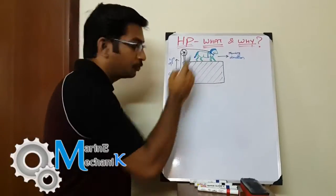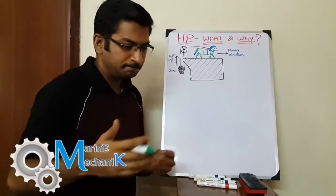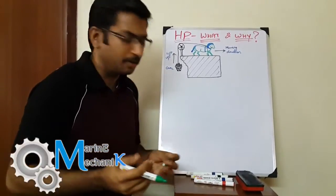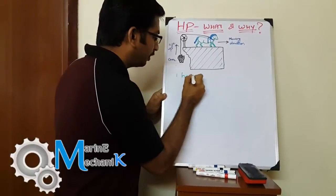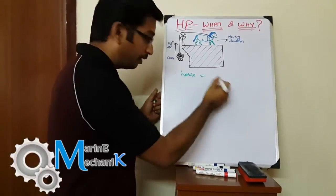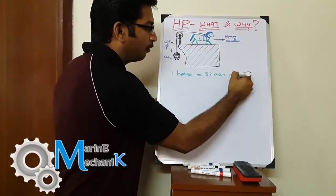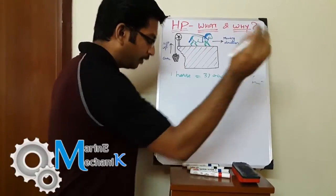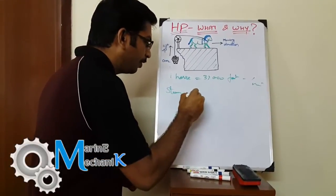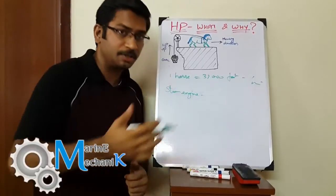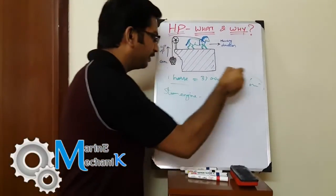Originally, horses were used for doing all sorts of work—from lifting coal to various other tasks. He quantified the amount of work done by one horse, which is roughly 33,000 foot-pounds per minute. Now he has a steam engine which he wants to sell in the market.